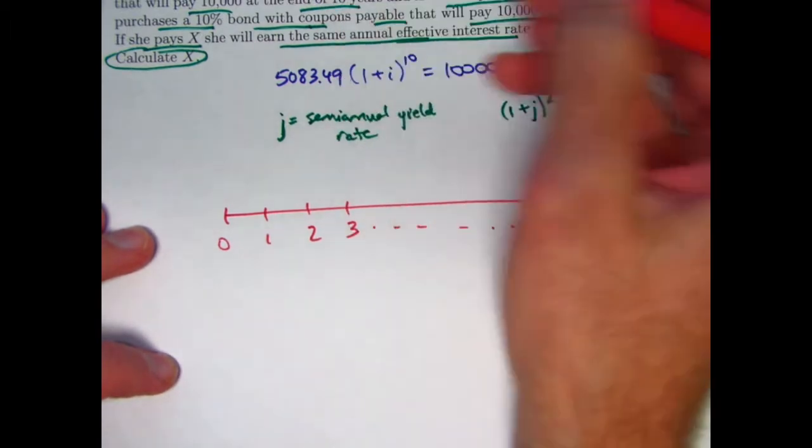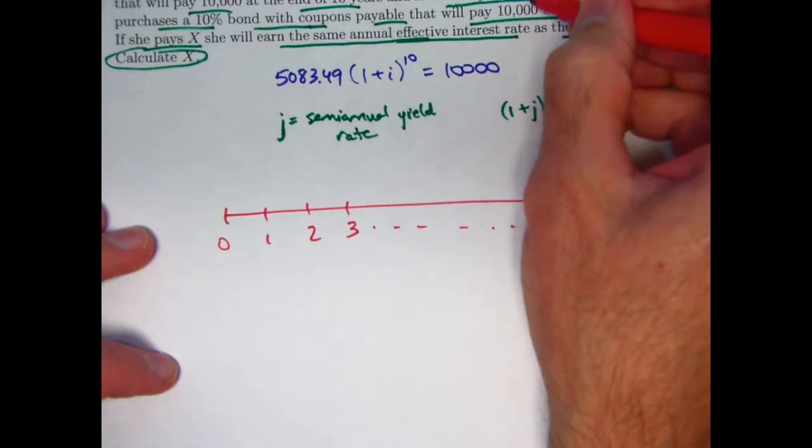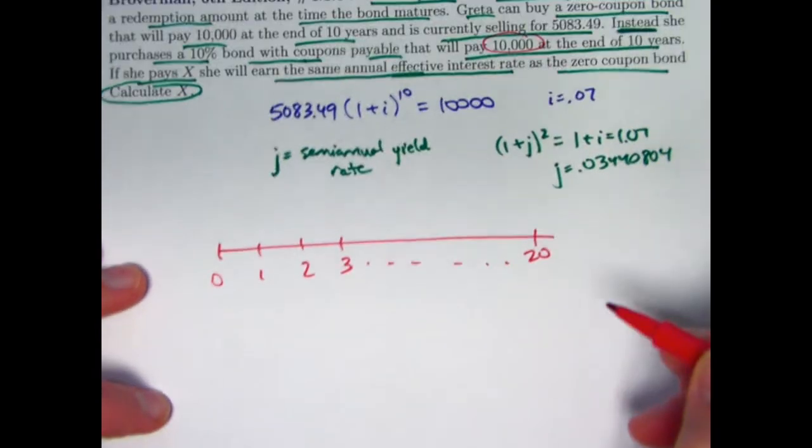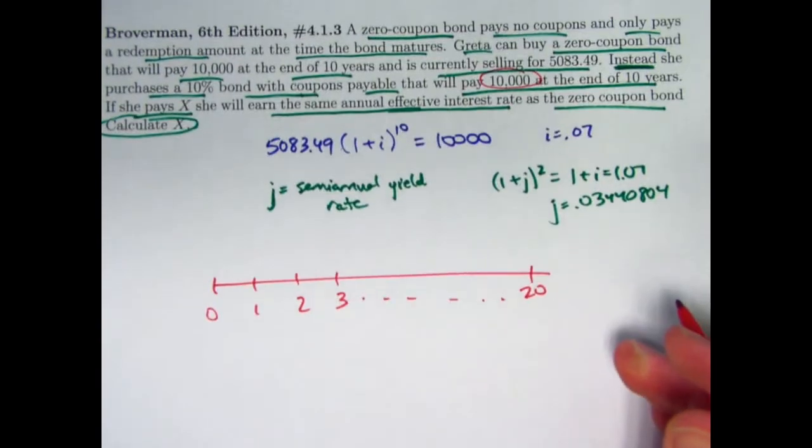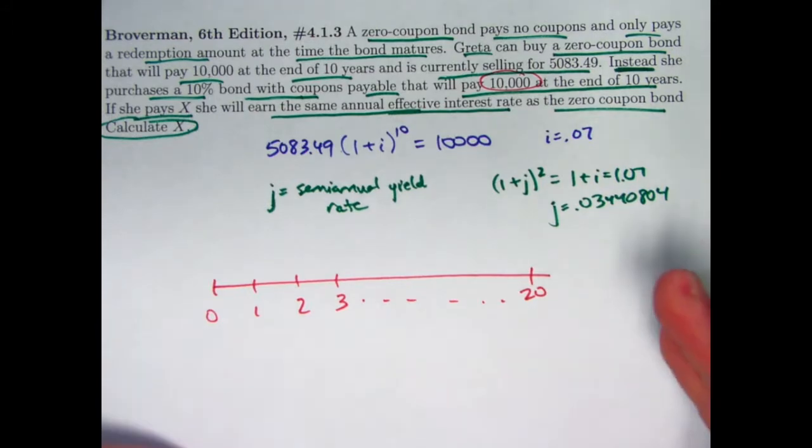The coupons are going to be evidently the face amount is $10,000 even though they don't say it's a face amount. That would have to be what it is based on the information that we're given.